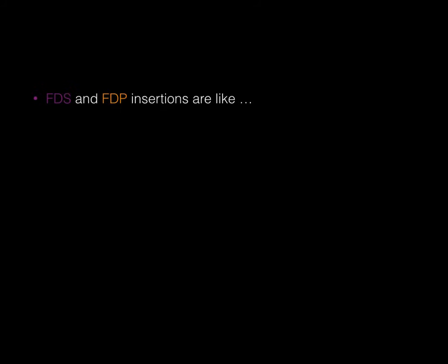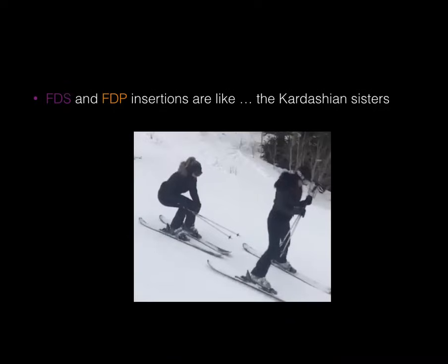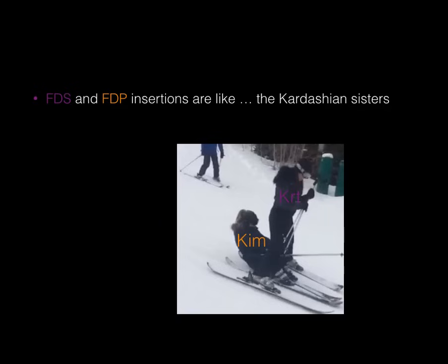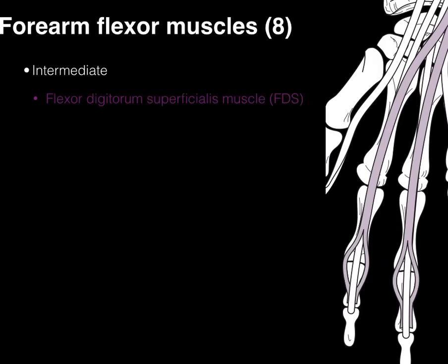The FDS and FDP insertions relate like the Kardashian sisters. The FDS is like one sister who bifurcates — spreads her legs — to attach on the middle phalange. The FDP is like the other sister who skis through those legs, passing through the split of the FDS to insert on the distal phalange. This is something you can observe clearly in the cadaver lab.